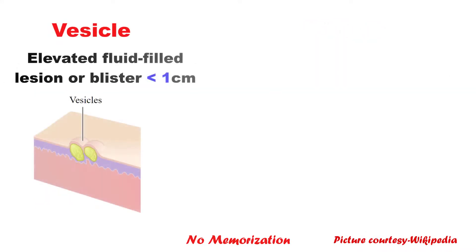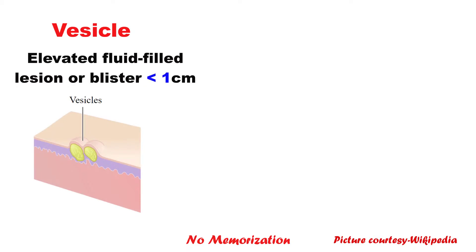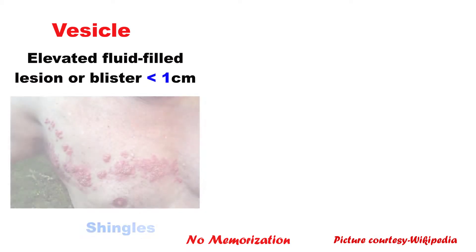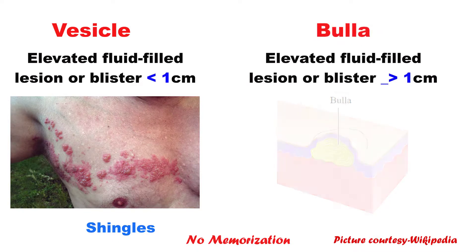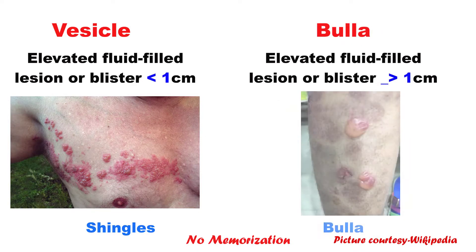Let's move to vesicle. It is an elevated fluid-filled lesion or blister of less than 1 cm. For example, shingles. When it is equal to or more than 1 cm, the same lesion is called a bulla, such as pemphigoid.